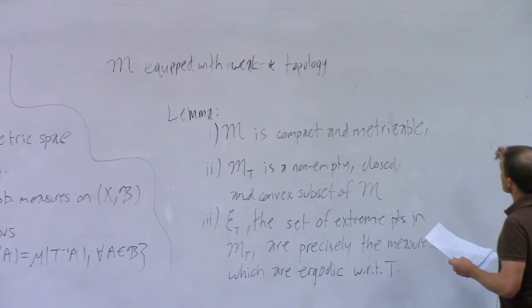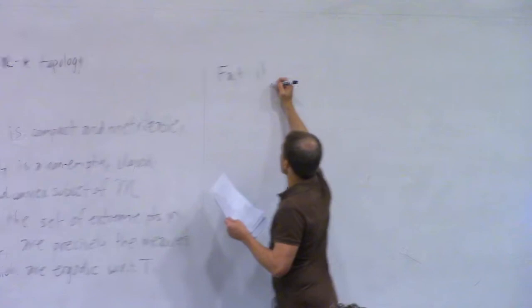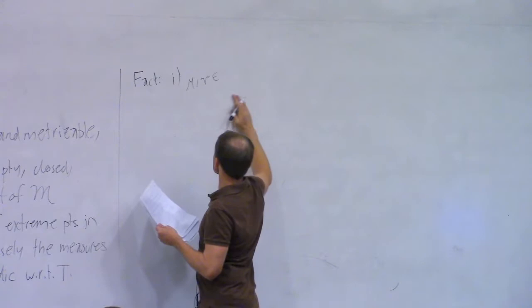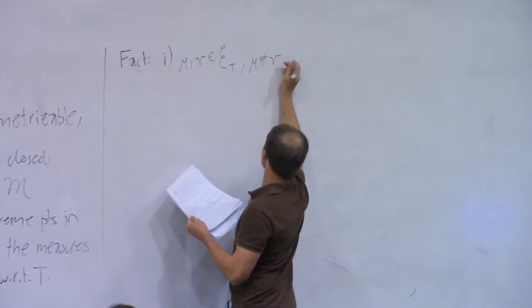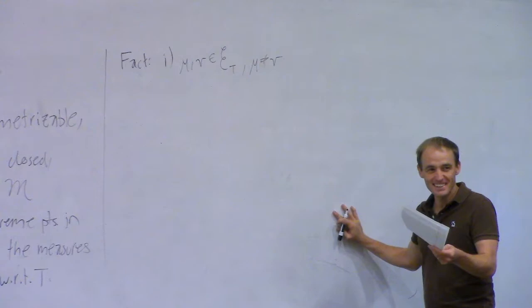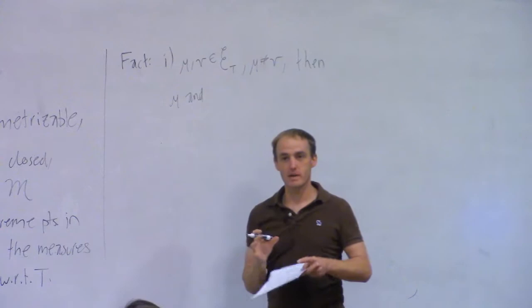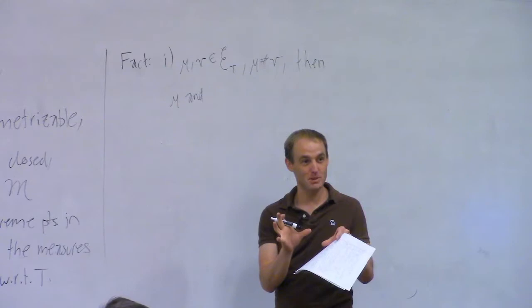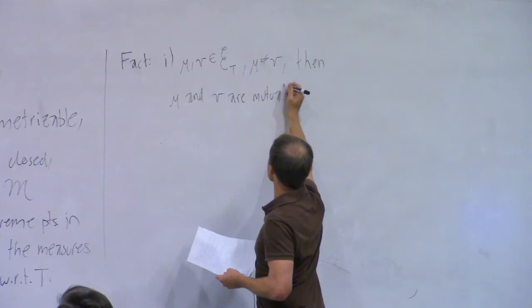Here's a preview of the final exam: if I have two distinct ergodic measures, what can I say about them? They're mutually singular — you can decompose your space into a union of two measurable sets, one measure is supported on one, the other is supported on the other. The mu-measure of one set is zero, and the nu-measure of the other is zero. That's an important and very useful fact.